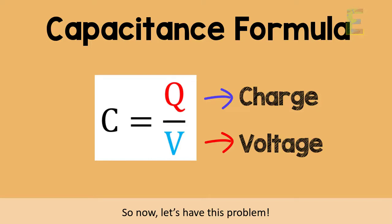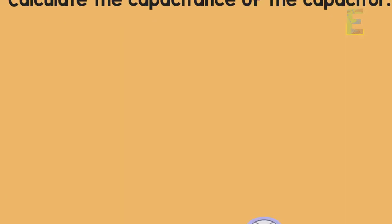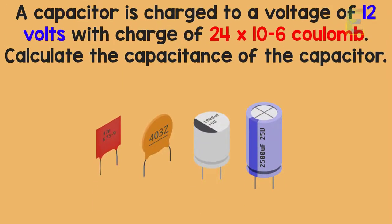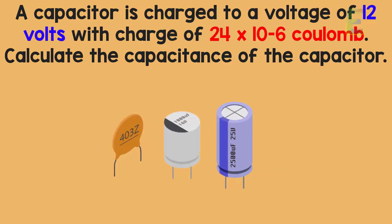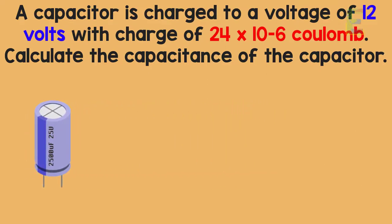So now let's have this problem. A capacitor is charged to a voltage of 12 volts with charge of 24 times 10 to the negative 6 coulomb.